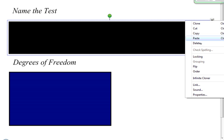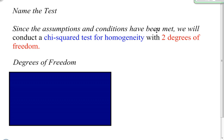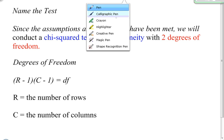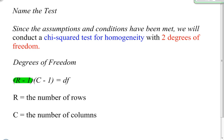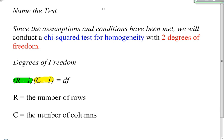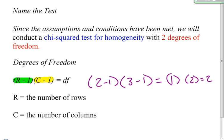Since all assumptions and conditions have been met, we will conduct a chi-squared test for homogeneity with two degrees of freedom. To find degrees of freedom, you take the number of rows minus one, multiplied by the number of columns minus one. My table has two rows and three columns, so it's (2 − 1) × (3 − 1) = 1 × 2 = 2 degrees of freedom.